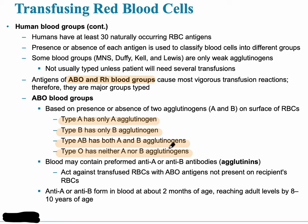Because Type O has no agglutinogens, it won't trigger an antibody response. The antibodies are called agglutinins and are found in anti-A or anti-B serum. When blood typing is done in the hospital, the unknown red blood cells are mixed with a known chemical — the anti-A or anti-B antibody — to see if clumping occurs. If there's clumping, that's a positive marker for that antigen.